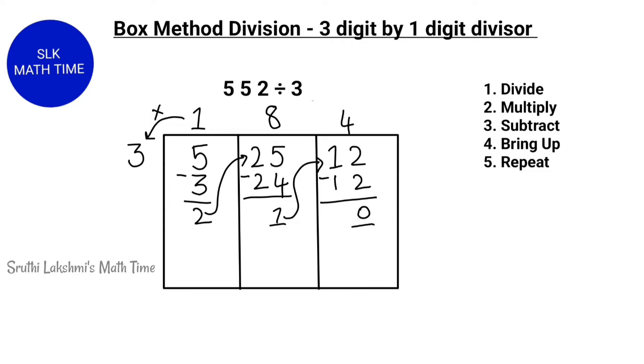Since we have a 0 here, we can ignore all of these numbers. Now, let's look at the top numbers, which are our quotient. So, our quotient is 184. The answer is 184, and we have a remainder of 0. See how organized this division problem looks and how easily we calculated our answer without any difficulties.